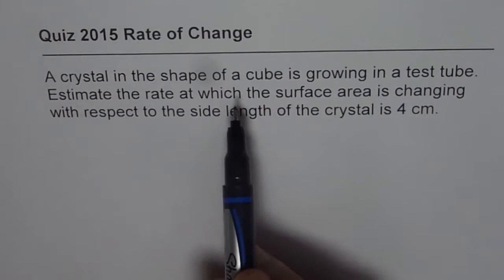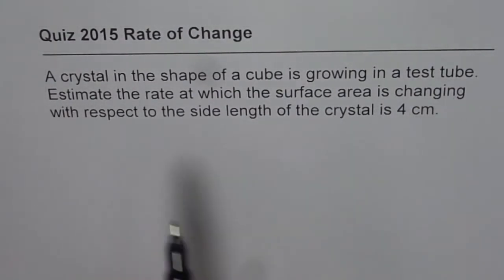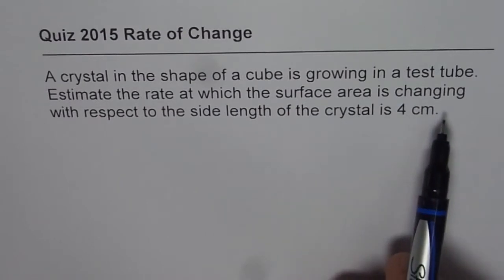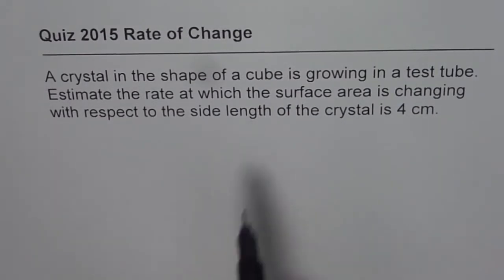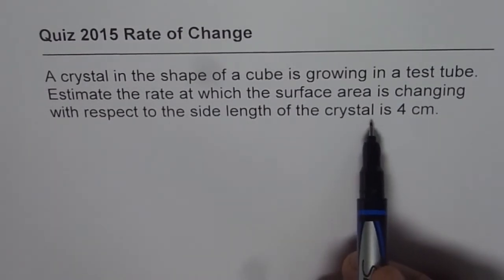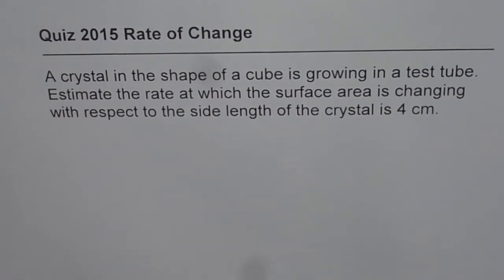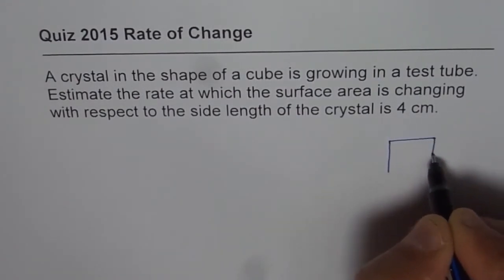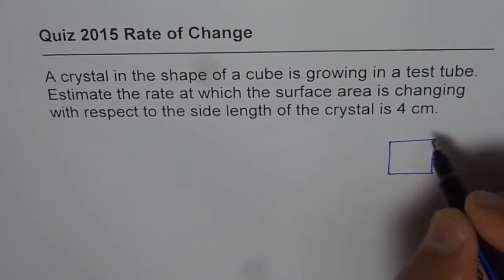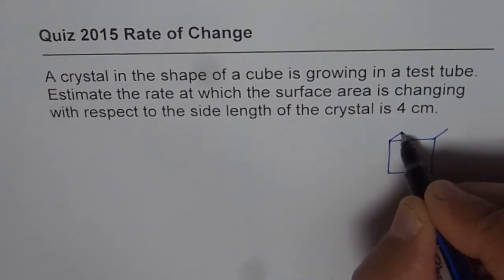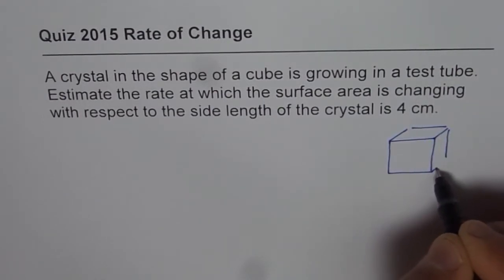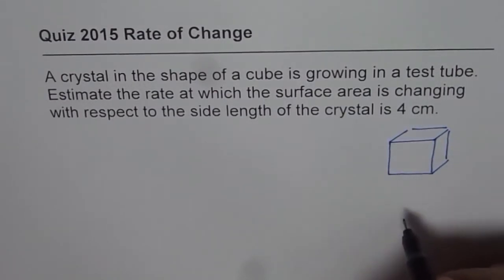A crystal in the shape of a cube is growing in a test tube. Estimate the rate at which the surface area is changing with respect to the side length of the crystal when the side length is 4 cm. So we are talking about a cube and we need to figure out the rate of change of surface area for the cube when the side length is 4 units.